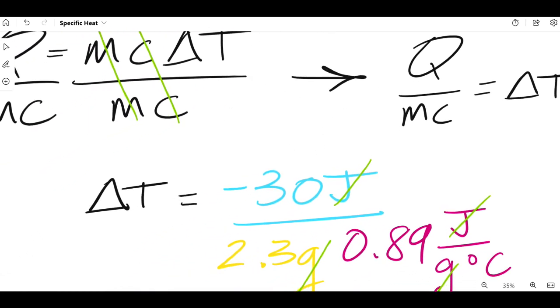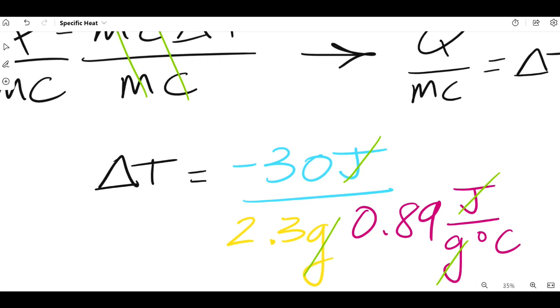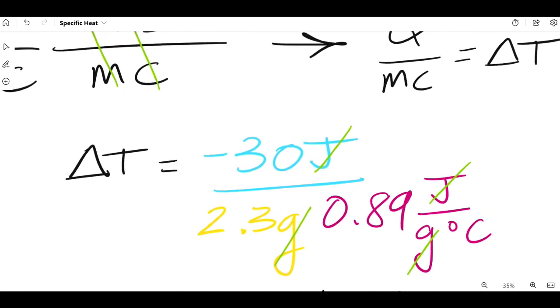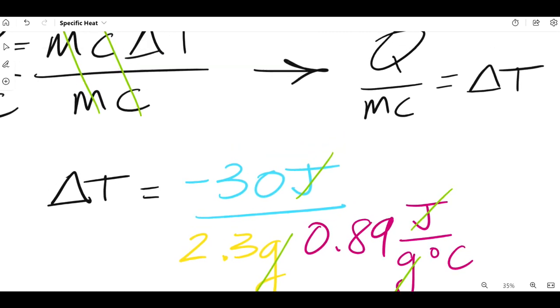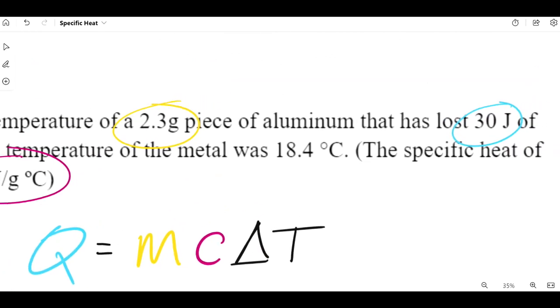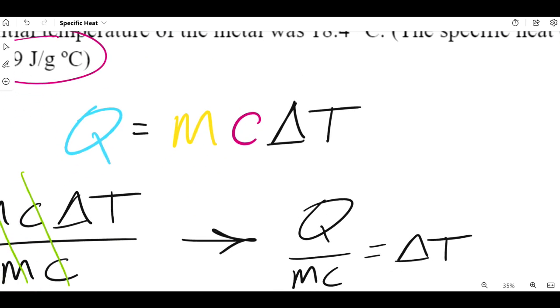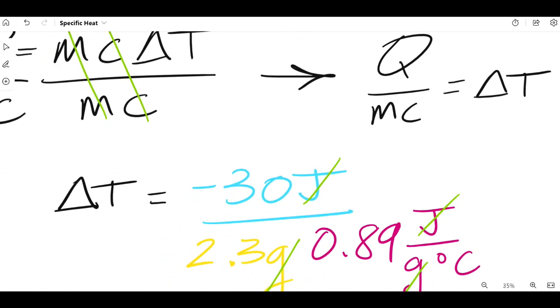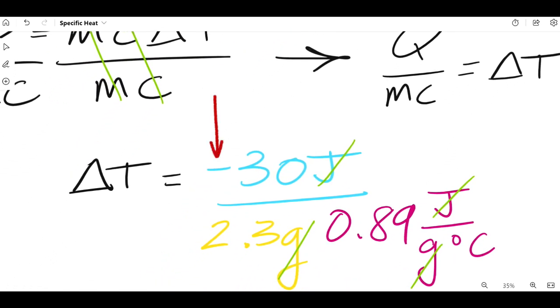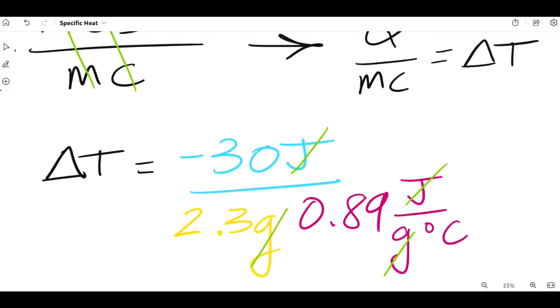Now, when we actually go to put in those numbers, I'm just going to kind of flip it around so that the delta T is on the left side. And now I'm going to start to put in those values that were given to me in the problem. So, notice for the Q, up here in the question, it said it lost 30 joules of energy. Well, when energy is lost, we have to represent that as a negative. So, that's a little bit tricky, I guess. And the problem, it doesn't tell us to put the negative in front of the 30 joules, but we're using context clues. Anytime energy is lost from an object or a substance, we want to represent that with a negative sign. So, that's negative 30 joules, the mass was 2.3 grams, and I'm multiplying the mass by the specific heat which was given to us as 0.89 joules divided by grams degrees Celsius.